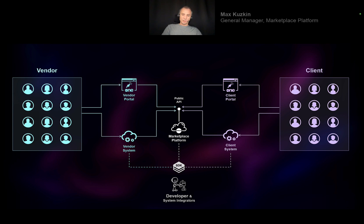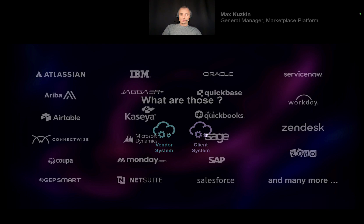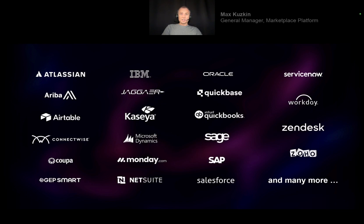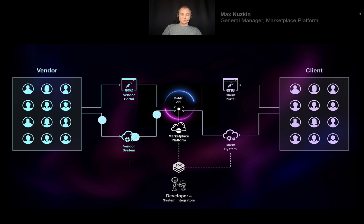What are those systems that our platform integrates with? There are a lot of them — ticketing systems like ServiceNow or Zendesk, Workday, ERP systems where the procurement process is maintained, ConnectWise, Jira, and many more. All of those are typically customized for the needs of the specific enterprise, which is why an out-of-the-box integration is rarely applicable. Nevertheless, those integrations need to connect with the public API of our platform.